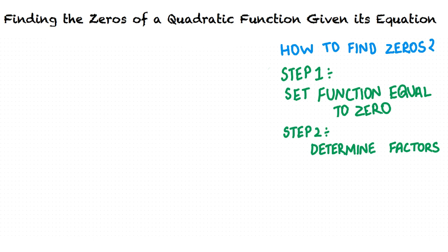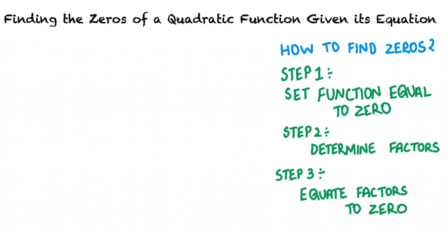The next step is to determine the factors of the quadratic equation. Finally, we equate the individual factors to zero and find the zeros of the quadratic function.